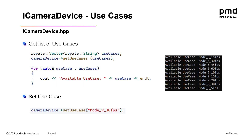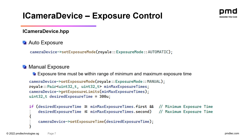Here are two examples of how to work with use cases: the first shows you how to get a list of available use cases, and the second shows you how to set one. A camera device has two exposure modes: either automatic or manual. With automatic mode, the camera configures an optimal exposure time based on the current scene. With manual mode, you can configure the exposure time to a static value. Please note that each use case has a minimum and maximum exposure time, and the value you set must be within that range.